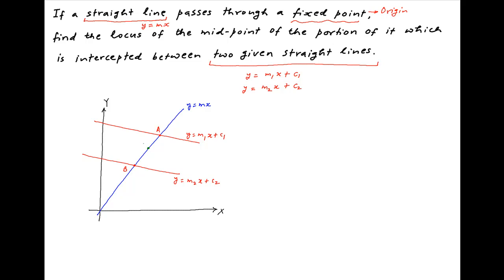Let's assume that the midpoint of the segment AB is the point P with coordinates (H, K). Now we begin by determining the coordinates of point A, which is the point of intersection of the line y equals mx with the line y equals m1x plus c1.